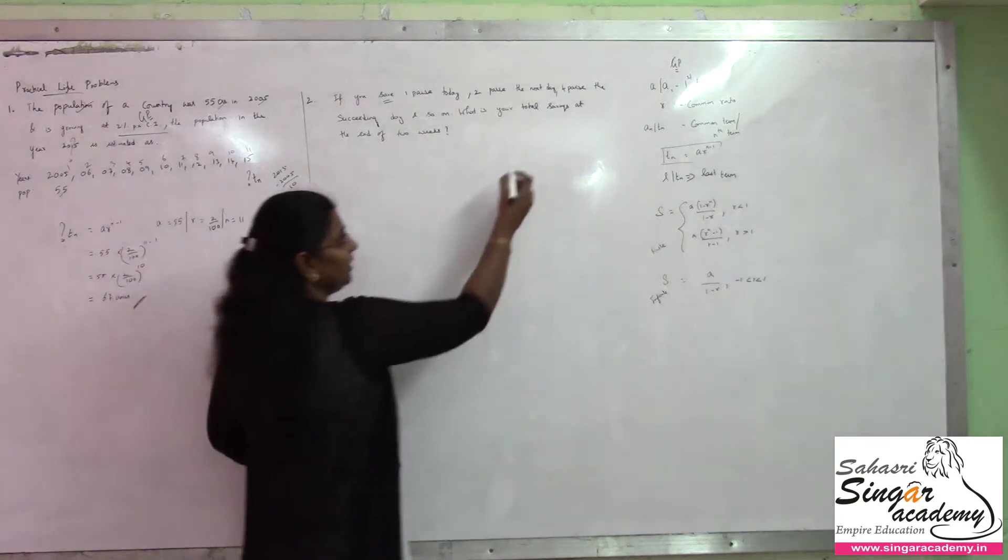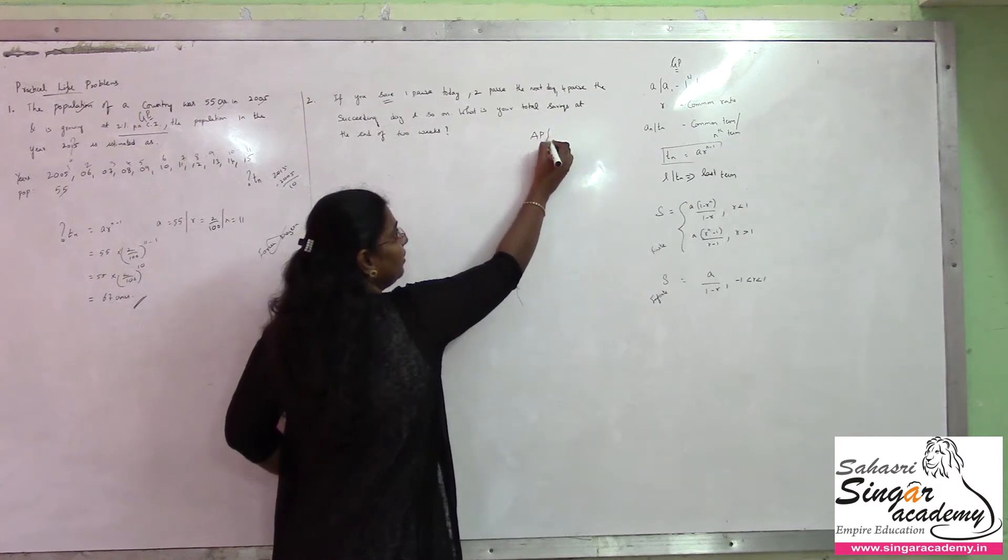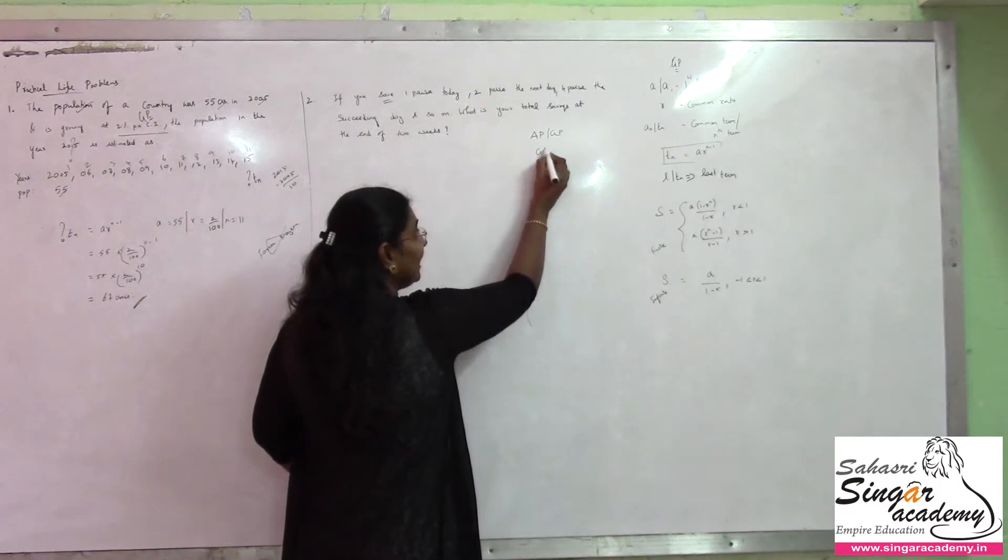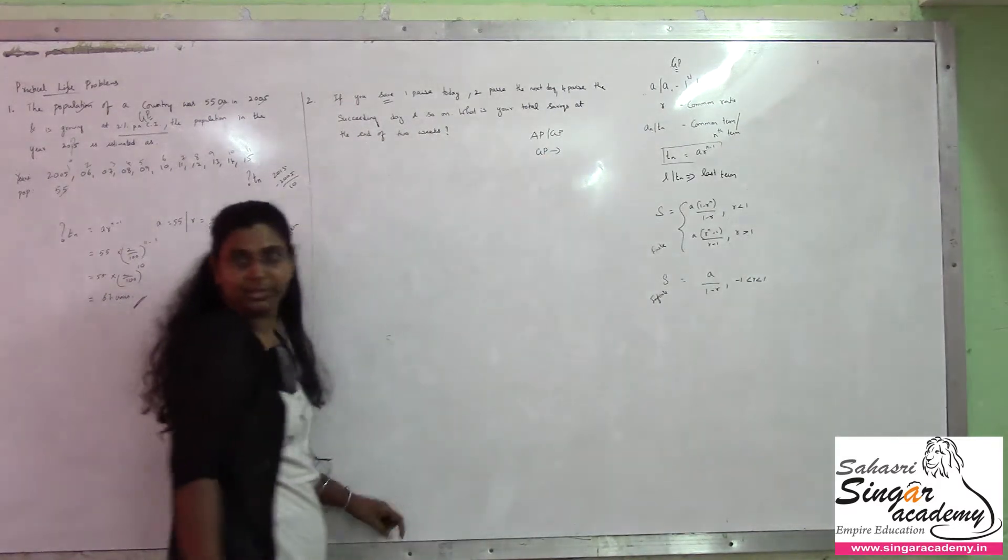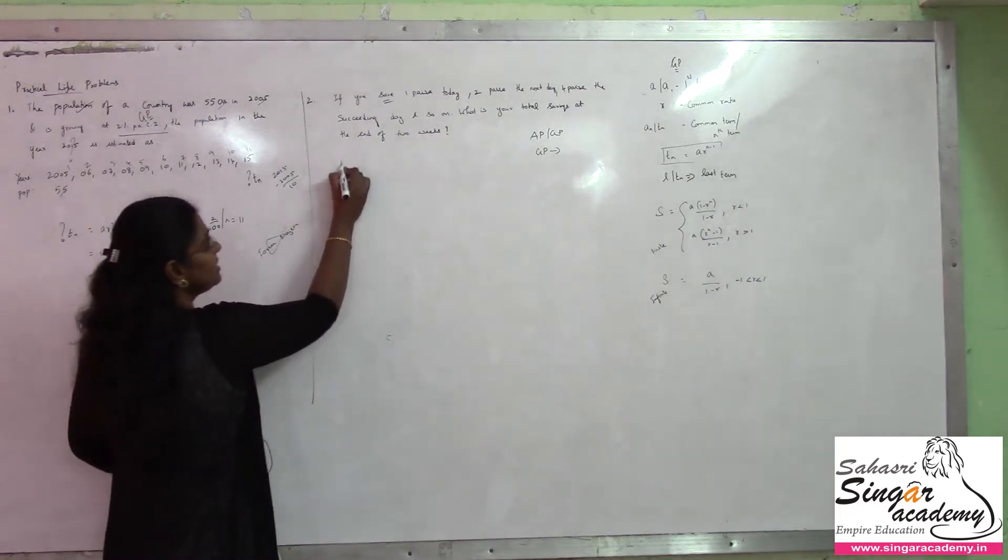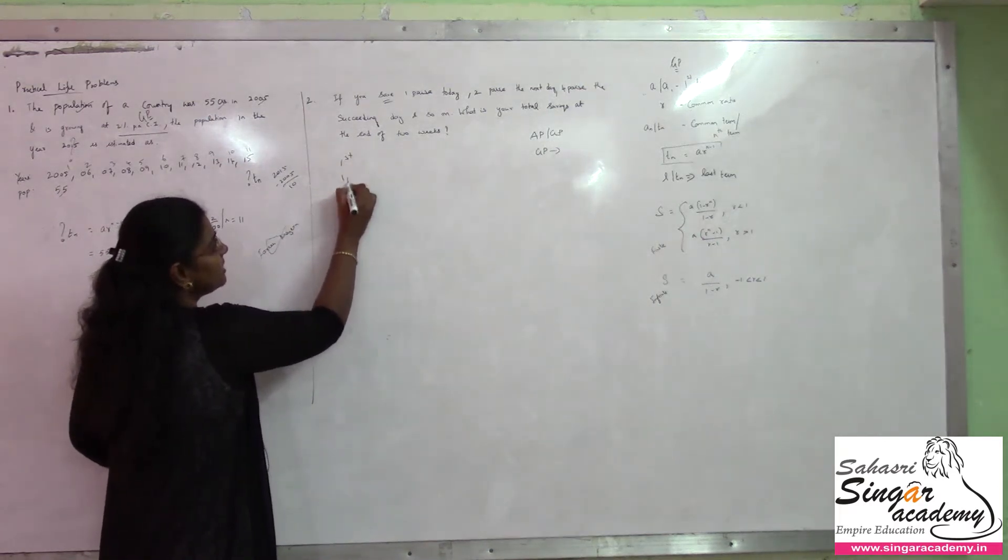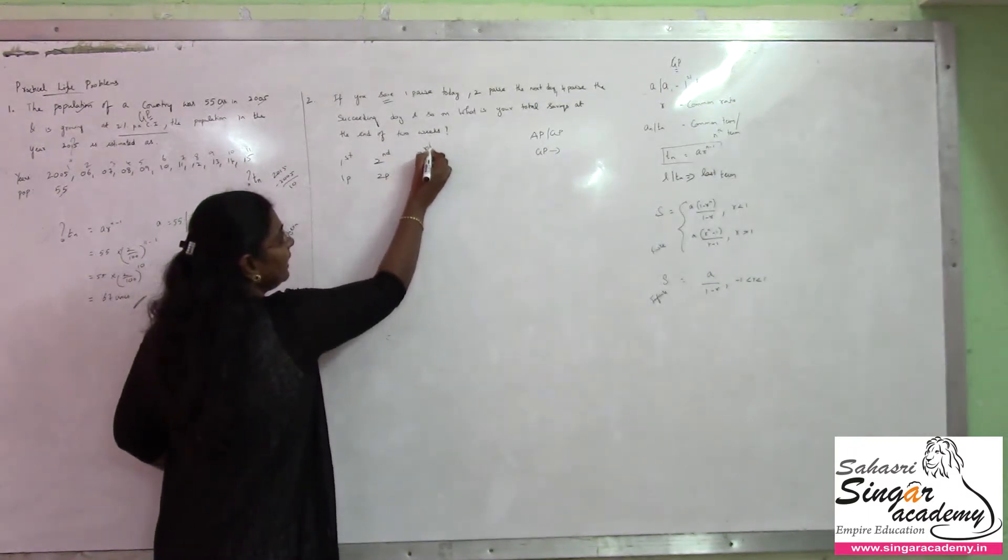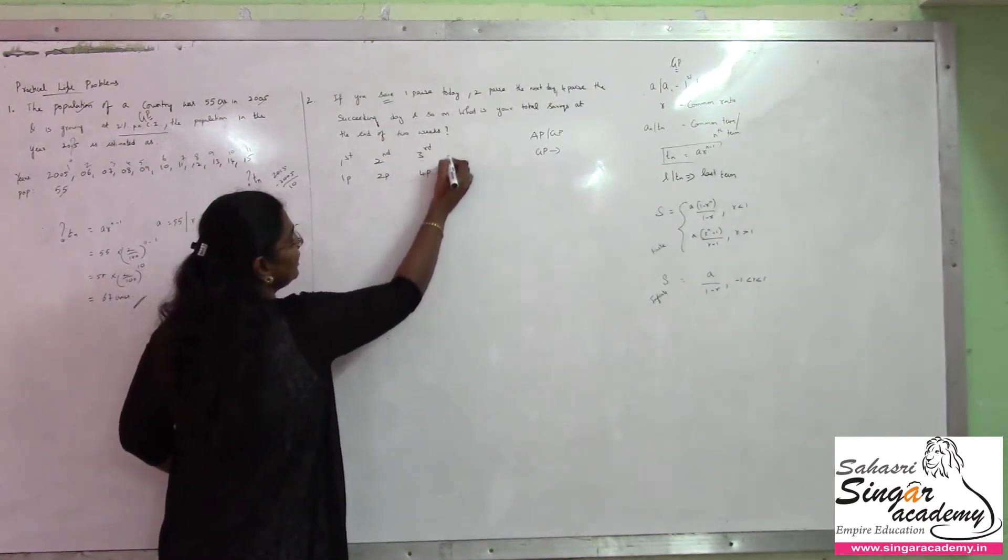If you want to check whether this falls under AP or GP first. If you want to find something in GP, let me put it in sequence form. First day, it is 1 paise. Second day, it is 2 paise. Third day, it is 4 paise. It goes on like this.